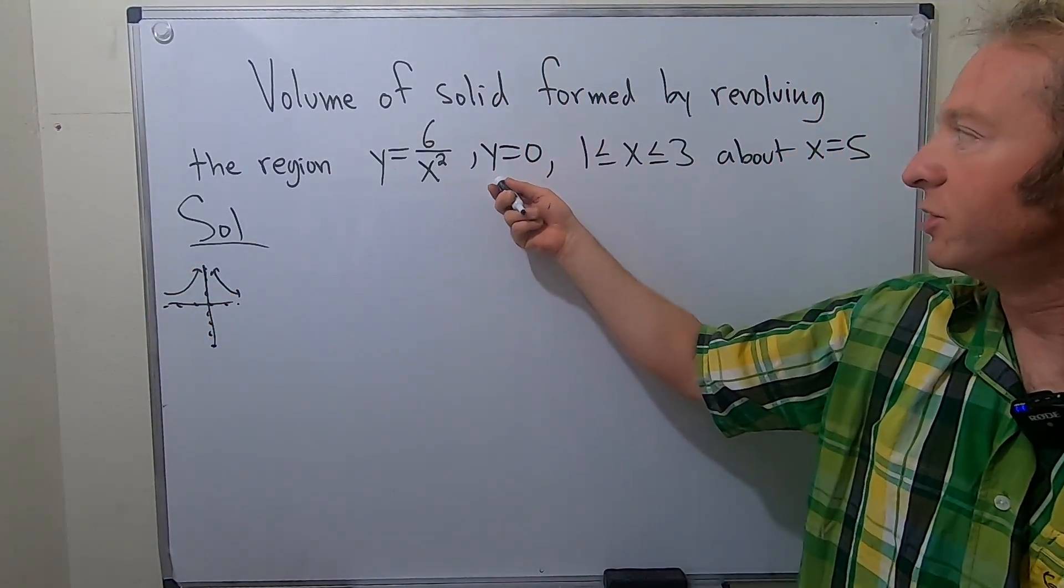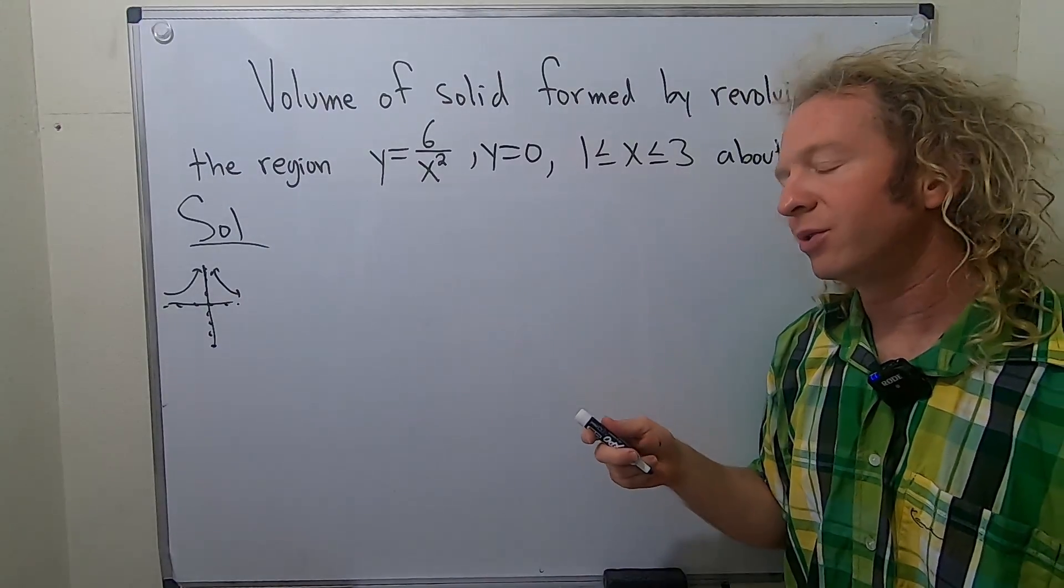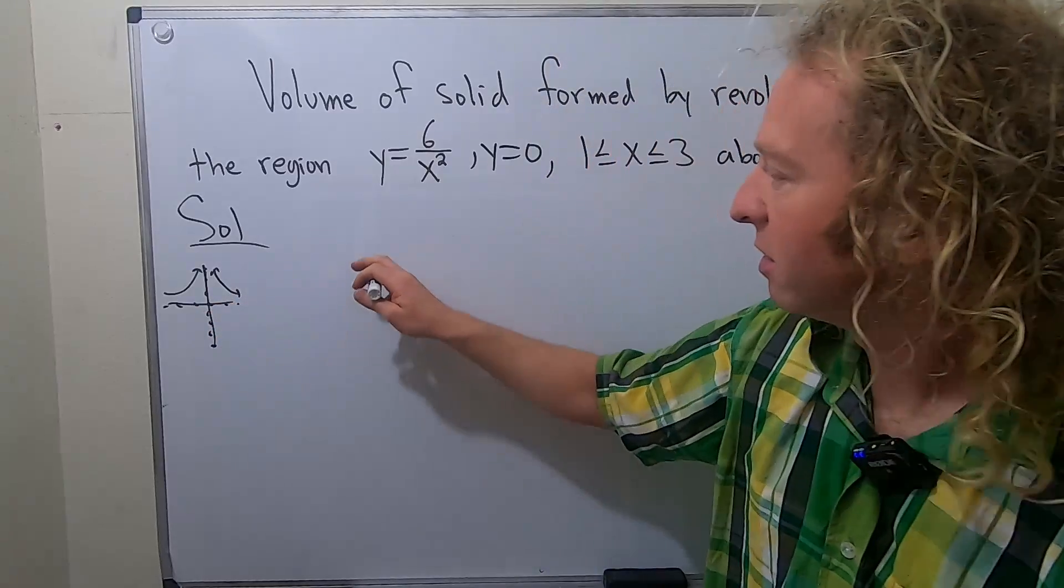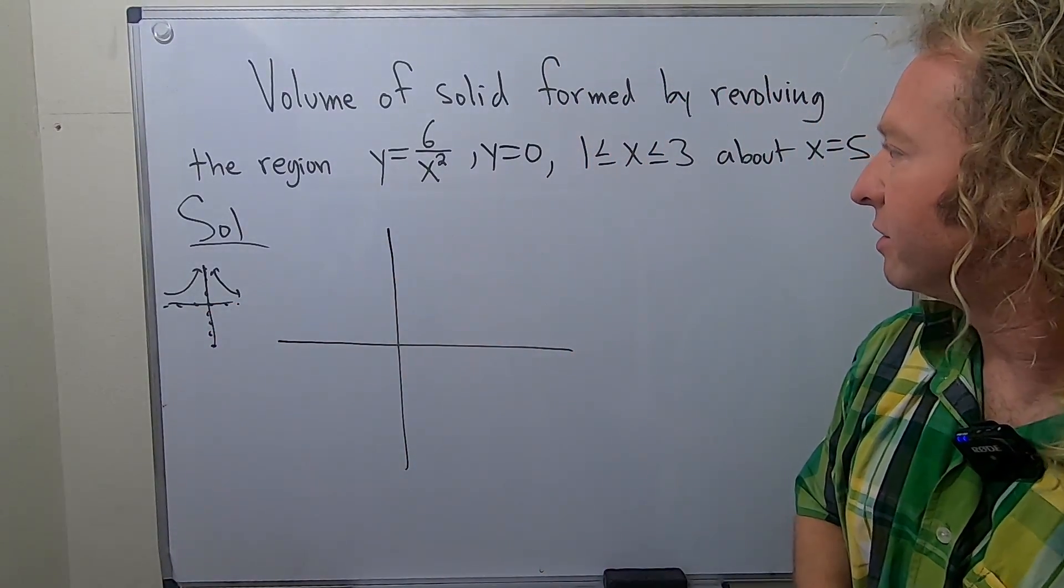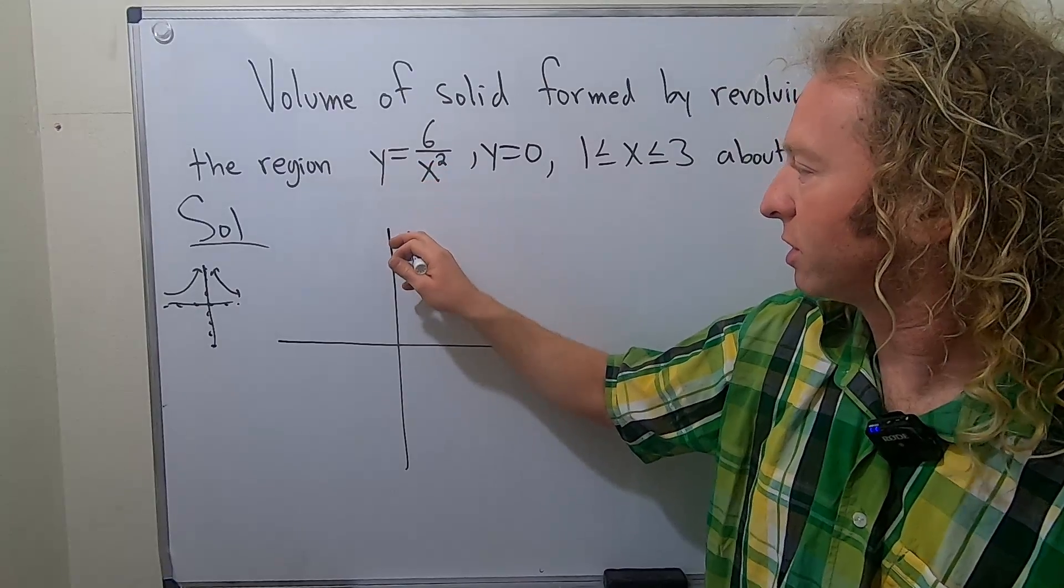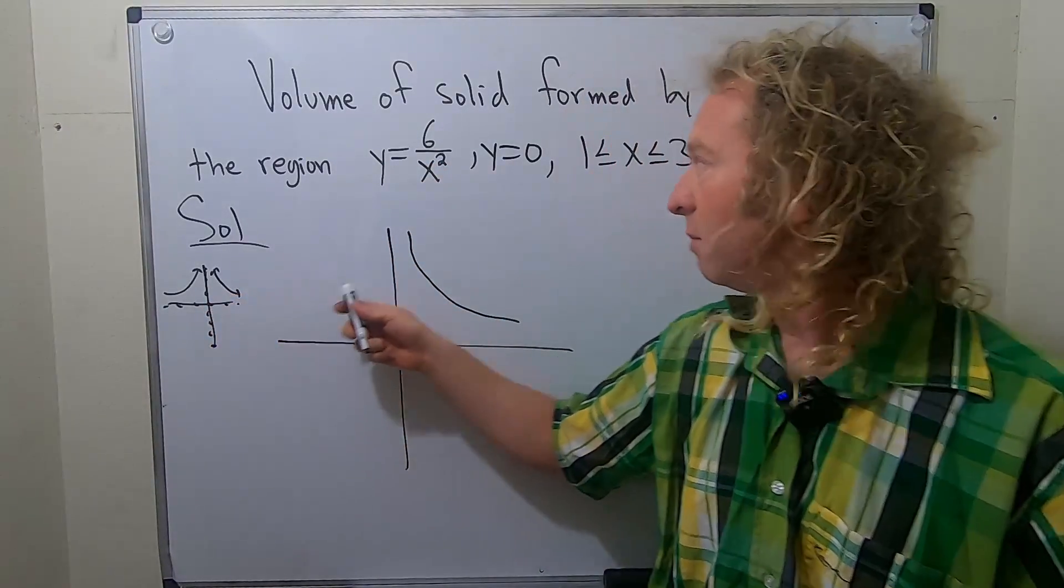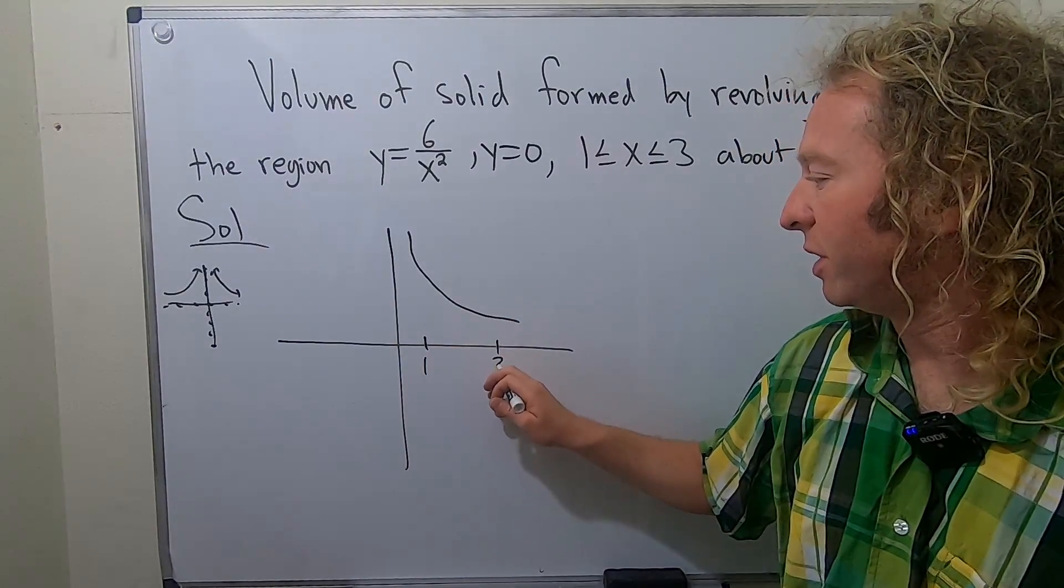But then we have y equals 0 and then x is restricted to this interval. So the idea is that we're only over here in this piece here. Let's draw it like this. All right, so basically 6 over x squared will look something like this. We only care about this piece because x is between 1 and 3.